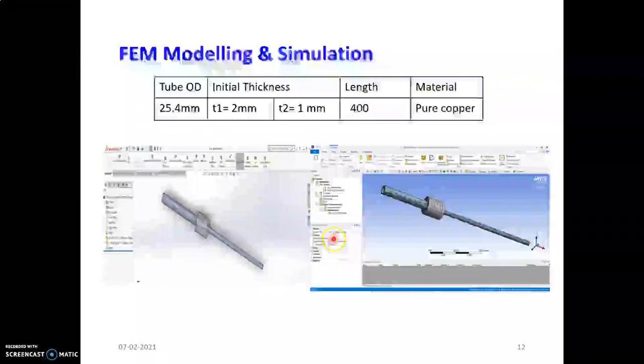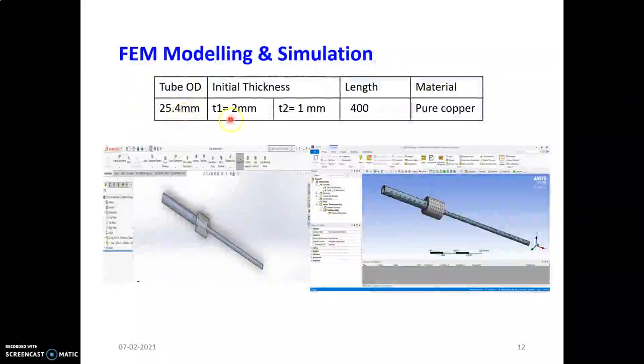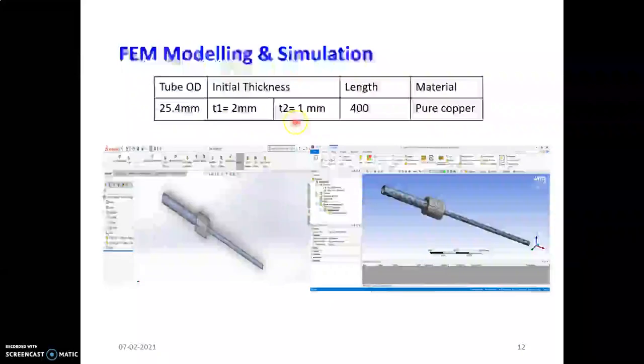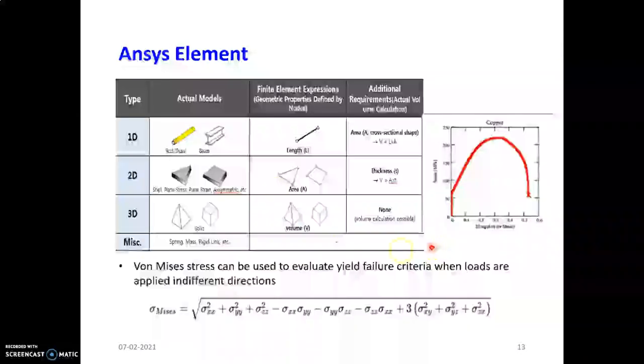This was the modeling of the tube and simulation. The outer diameter of the initial tube was 2mm thickness, T2 is 1mm, length of the tube is 400mm, using pure copper. The element used is a 1D element. You can see the equation of 1D element used to evaluate its criteria when loads are applied. These are how stress is calculated.